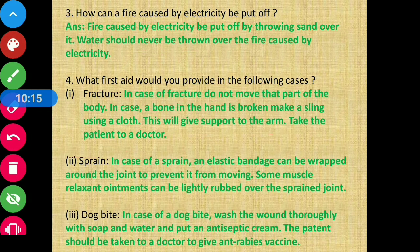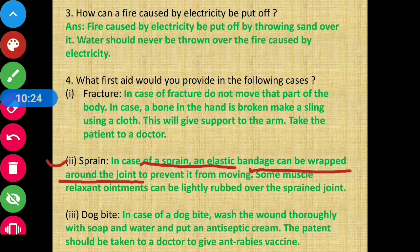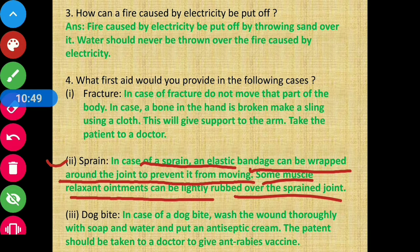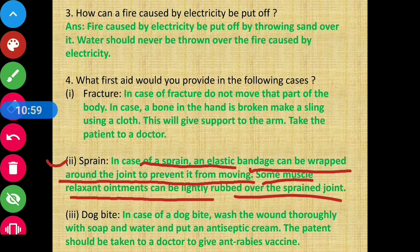In case of a sprain, wrap an elastic bandage around the joint to prevent it from moving. Some muscle relaxant ointments can also be lightly rubbed over the sprained joint to reduce the pain.